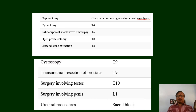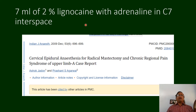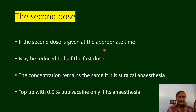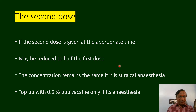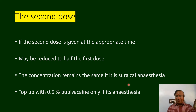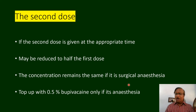7 ml of 2% lignocaine with adrenalin at the C7 interspace may be enough for radical mastectomy — that is 0.7 ml per segment for 10 segments, giving 8 ml or 6 to 7 ml. If the second dose is given at the appropriate time, it may be reduced to half. However, if you are giving it after six hours there is no meaning in giving half the dose — the concentration remains the same. For surgical anesthesia top-up, use 0.5% bupivacaine before it wears off, not a lower concentration.